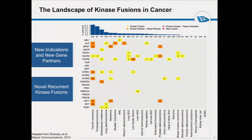Second, there are fusions involving known kinases for which we found new partners — and this is really a recurrent theme for many fusion-finding efforts, as there are a lot of gene partners that tend to be fused with kinases. This is really a message for diagnostic efforts: they cannot be specific for just one driver gene and its partner — they need to be agnostic of the partner gene.